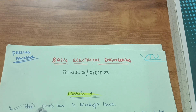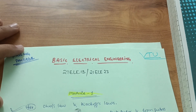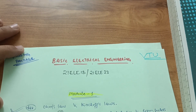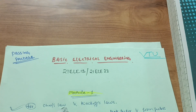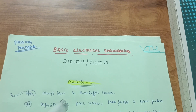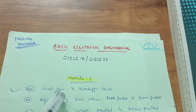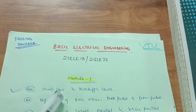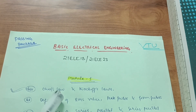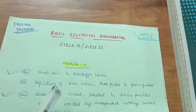Without wasting any time, let me start with Module 1, which is considered the passing module in Basic Electrical Engineering. You have to focus on this content and not skip anything. In Module 1, some important questions are: What is Ohm's Law and Kirchhoff's Law? They may also ask for the limitations of Ohm's Law, so focus on these two super important questions.